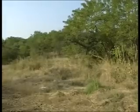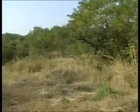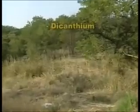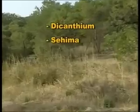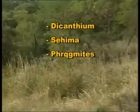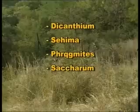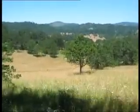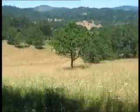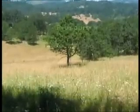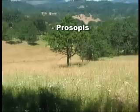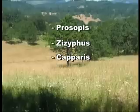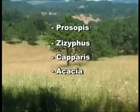The common producer grasses of Indian grasslands include Dichanthium, Sehima, Phragmites, Saccharum, Cynodon, and Cymbopogon. The common shrubs and trees of savannah grasslands as observed in India are Prosopis, Ziziphus, Capparis, Acacia, and Butea.